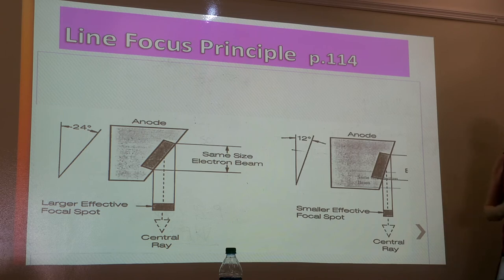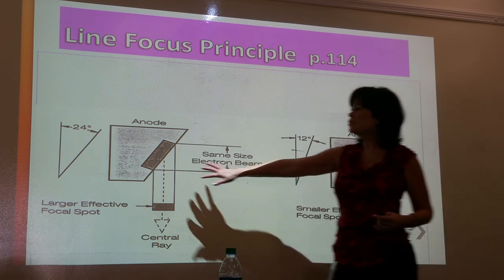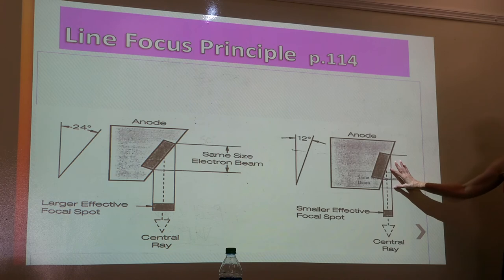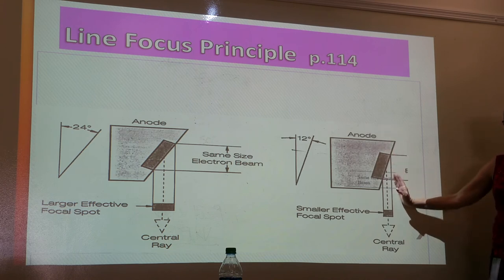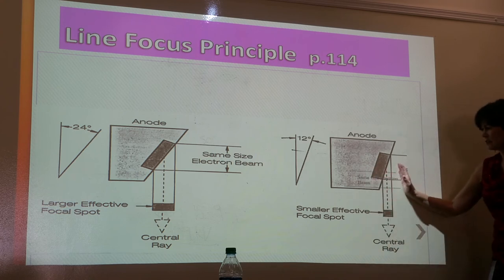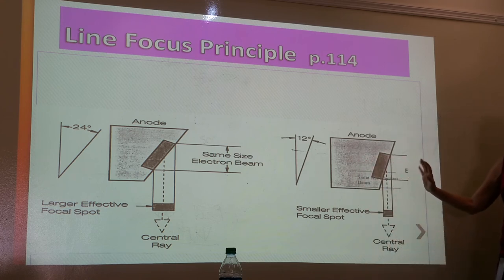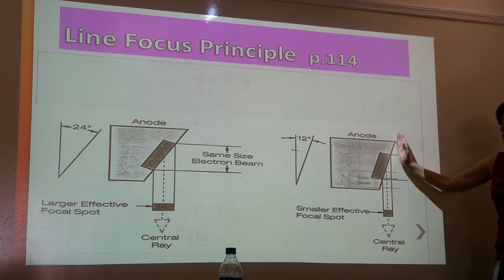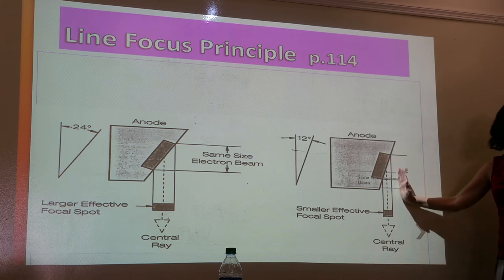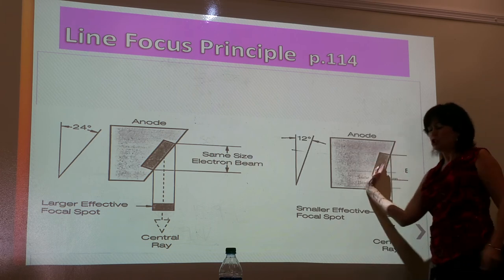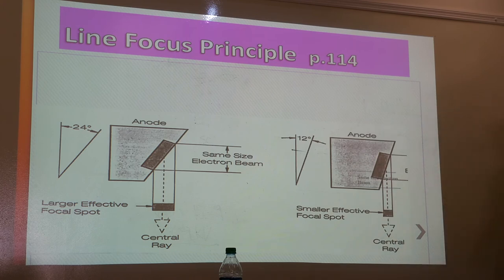How does the anode angle affect the effective focal spot size? Here's a 24-degree angle versus a 12-degree angle. Flat would be zero degrees. The greater the angle, the larger the effective focal spot — it's still smaller than the actual, but the effective gets larger as the angle increases. So greater angle means greater effective focal spot size.